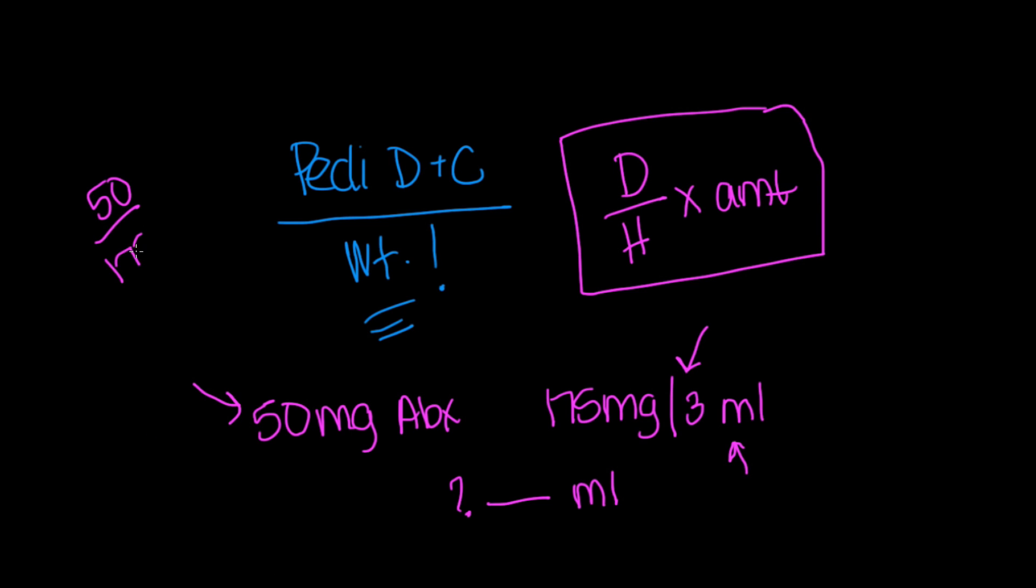So if we whip out our calculators, or if you're old school and you still like to do the math in your head, that's great. So we just do 50 divided by 175 times 3, and we get 0.857. If we round it, we get 0.86. If we rounded that, we get 0.9. So that's how we would do it.